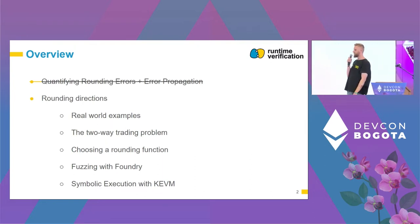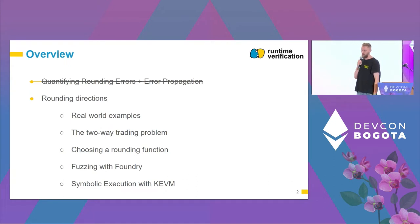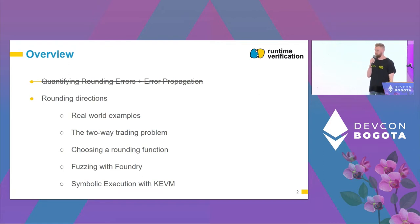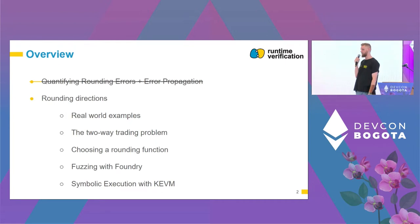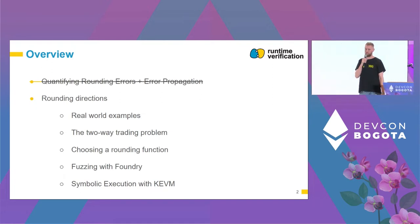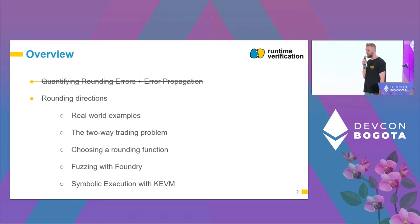I want to talk about the second thing that can go wrong: what can happen is that you want to approximate a value from below or from above, but you do it in the wrong direction. In other words, you want to round down but you round up instead, and that can lead to severe security vulnerabilities. I will show you some examples, but I'm going to work on a simplified example — make sure to understand the two-way trading problem.